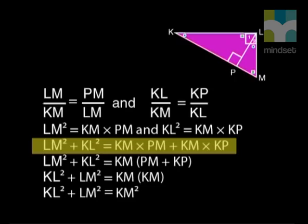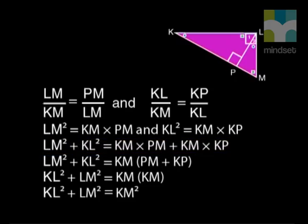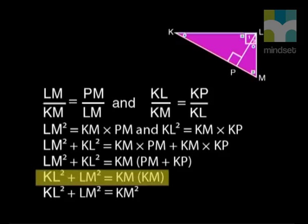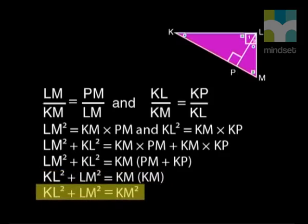Then, we use the similarity to write down ratios of the sides that will help us towards our goal. When we cross multiply, we create squares on sides LM and KL, the short sides of the big triangle. When we add them together and simplify the left-hand side of the equation, we are able to show that the two sides squared are equal to KM squared. This proof of Pythagoras theorem using similarity is not complicated. You need to spend some time working out which ratios to use in order to get to the end result.